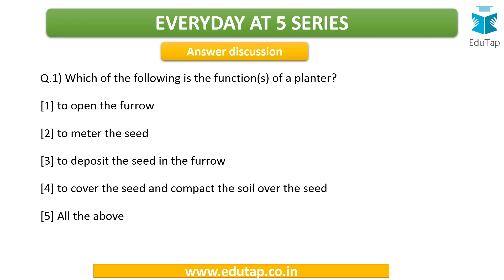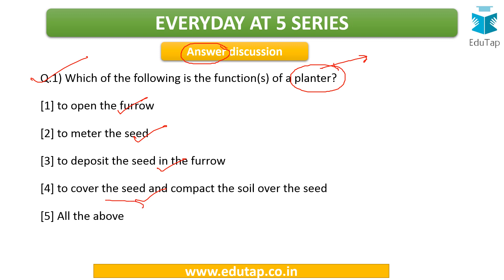Let us discuss the answers for the questions from the previous lecture. Question number one: which of the following are the functions of a planter? A planter is a farm equipment. Its functions include opening the furrow, metering the seed, depositing the seed in the furrow, covering the seed, and compacting the soil over the seed — it performs all the above mentioned functions. This is very important, basically it is multitasking as well.